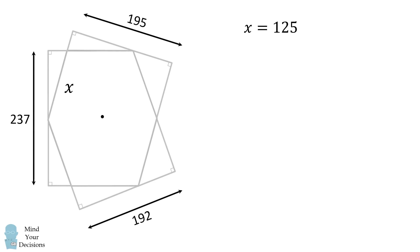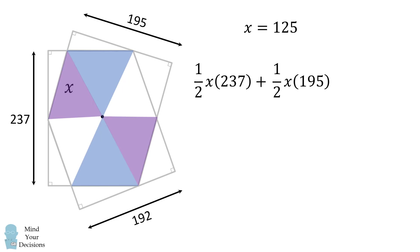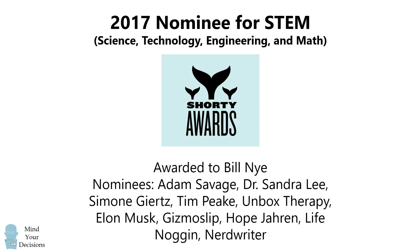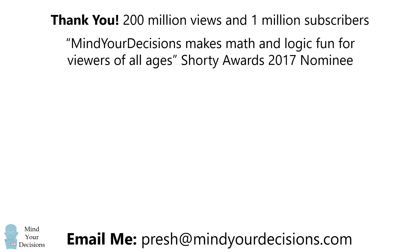We can then go back to our procedure for solving the area. The formula was the area equals x over 2 times (237 + 195 + 192). Substituting x equals 125 and evaluating, we get the area of the hexagon equals 39,000. Amazing! Thanks for making Mind Your Decisions one of the best channels on YouTube. See you next episode as we continue our quest to solve the world's problems one video at a time.